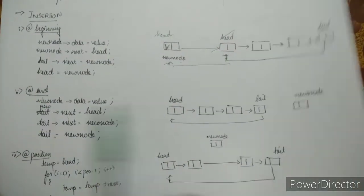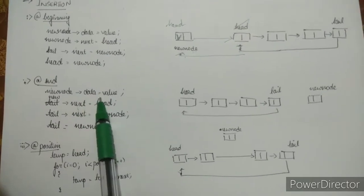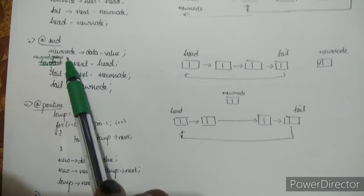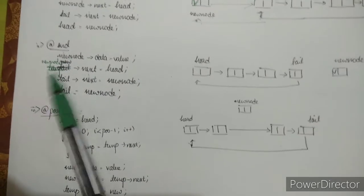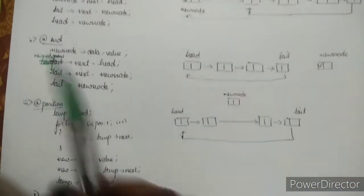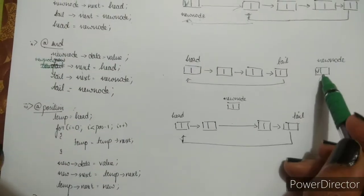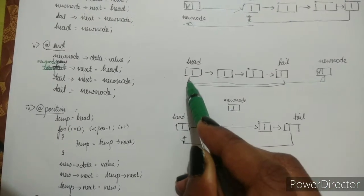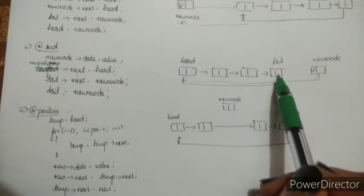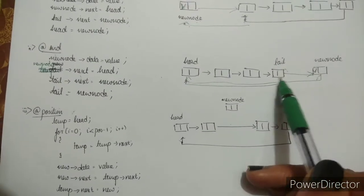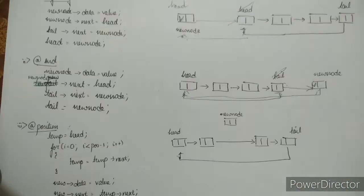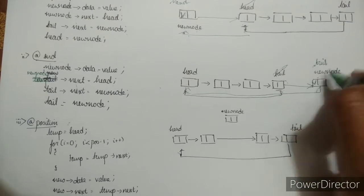For insertion at the end: new->data = value, new->next = head. The new node points to head. Then tail->next = new node — the tail's link to head is broken and redirected to the new node. Finally, tail = new node, making the new node the new tail.